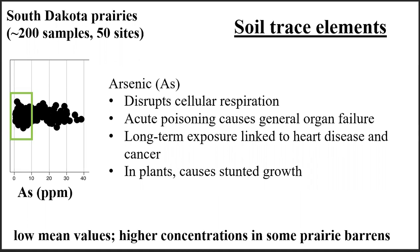In this chart, each black dot represents the average concentration of an element found at a site, and the x-axis represents concentration in parts per million. Let's begin with arsenic, which we all recognize as a poison. It works by disrupting cellular respiration, starving cells for energy. It has both acute and chronic effects, which means it will kill you now and later. For arsenic levels in soils, anything above about five parts per million is considered abnormally high. Most of the sites, represented by the green box, had low mean values, but as you can see, some of the sites had extremely high values.